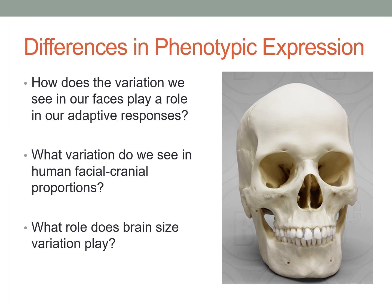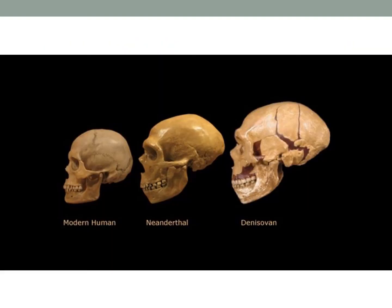We'll also look at differences in phenotypic expression — how variation in facial and cranial proportions plays a role in adaptive response. And brain size variation: there is a lot of variation in brain size, but brain size does not in any sense correlate to intelligence. Looking at modern Homo sapiens, Homo neanderthalensis, and Homo denisovan, there are big differences in skull shape and size, yet all these species shared similar cultural elements — clothing, family group living. It's not the size of the brain that matters, but the organization within it.